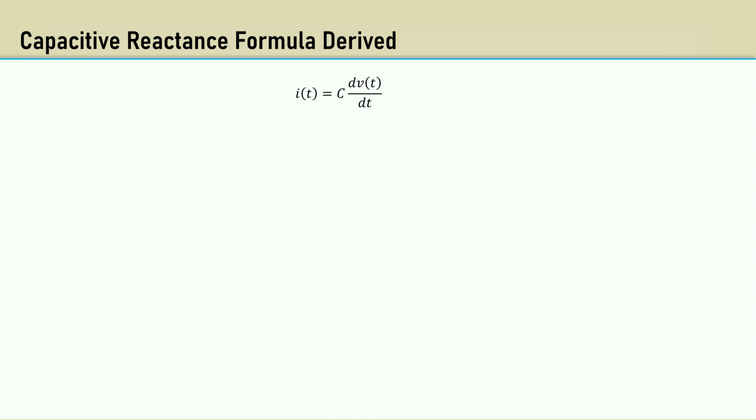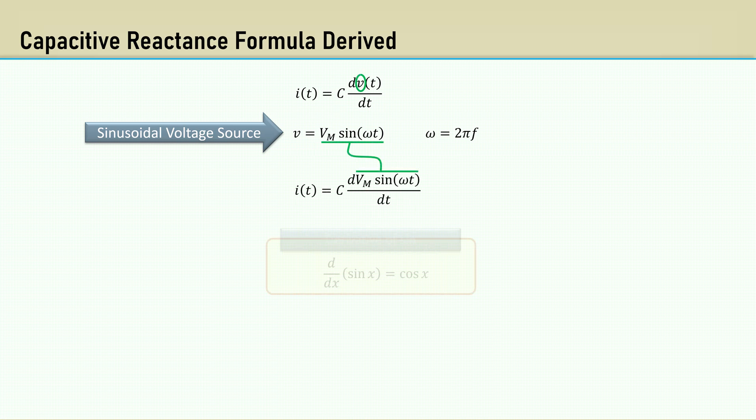Now let's move forward to deriving the formula for capacitive reactance. We already stated that the reactance was the opposition to an alternating current. Here's the formula for a sinusoidal voltage source. Omega is 2π times the frequency. We then replace the V with the sinusoidal voltage source. Recall that the derivative of sine of X is the cosine of X. That's so simple. Just replace the sine with cosine.